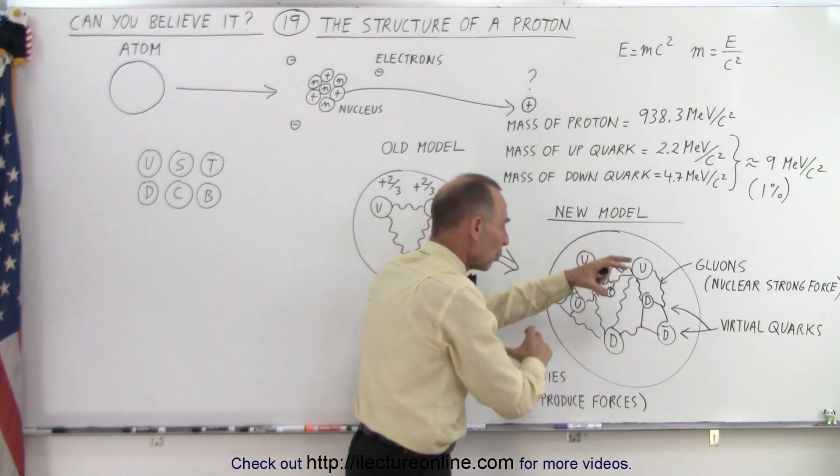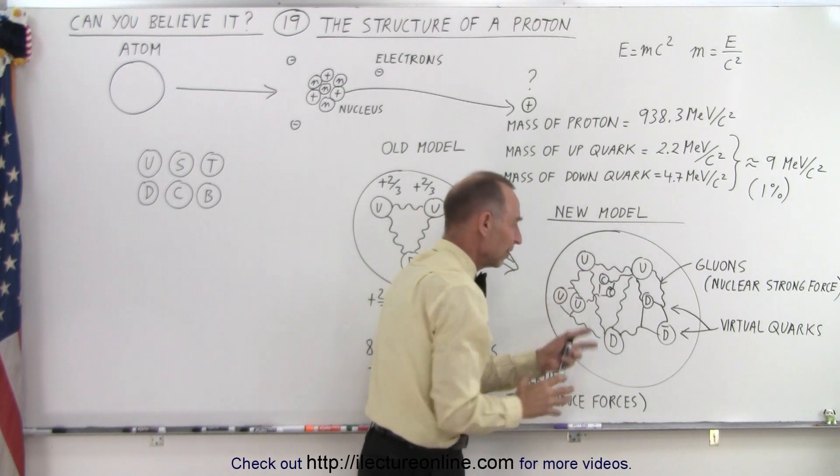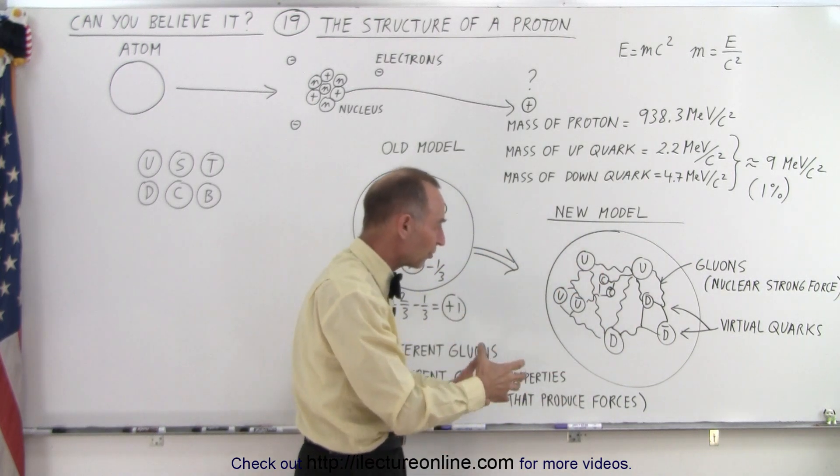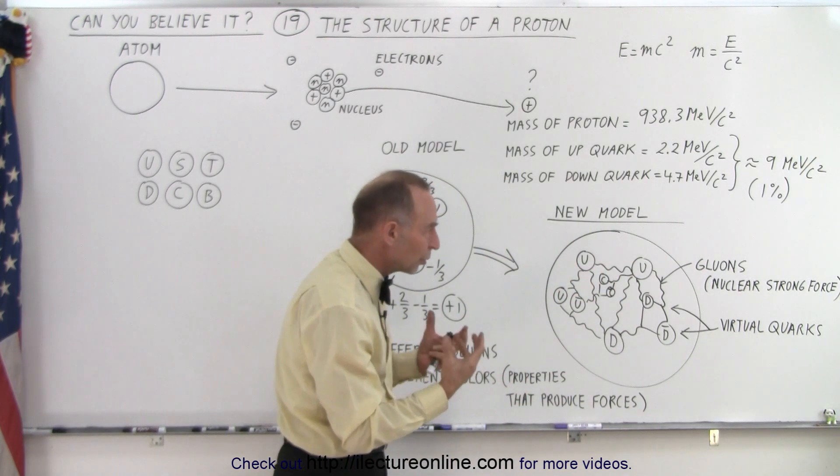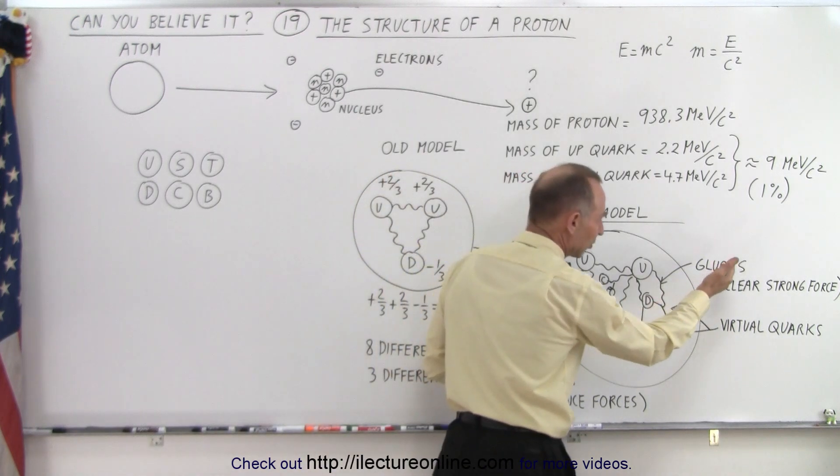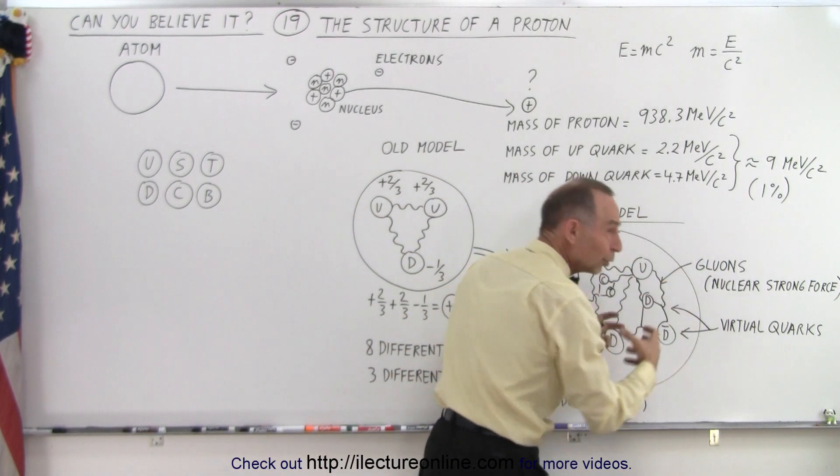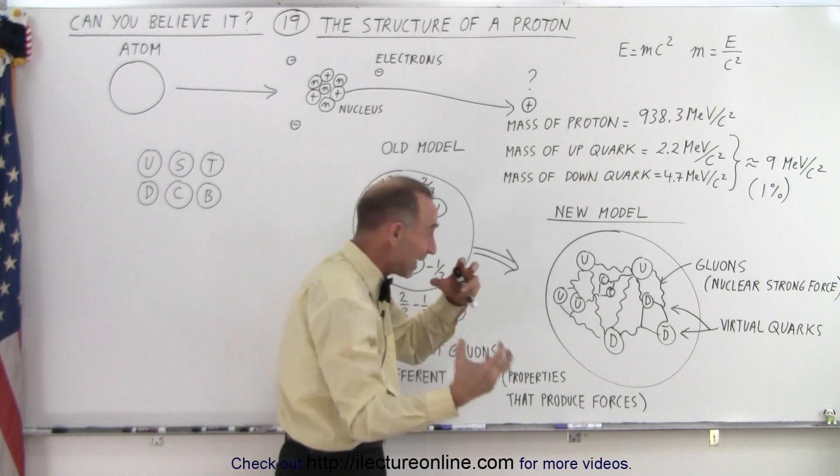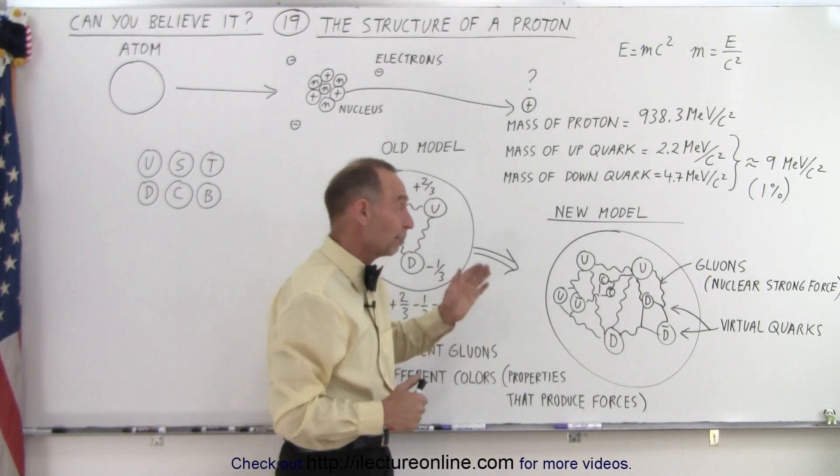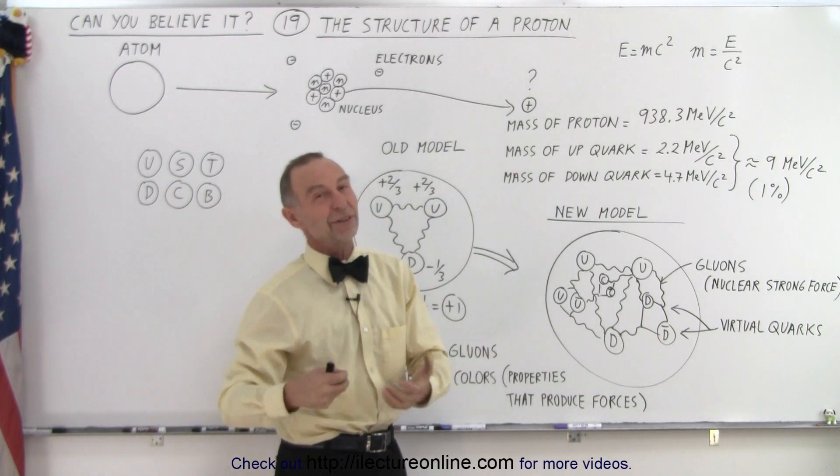And so we see this whirling mass of movement of quarks and gluons. And what the gluons are actually doing is they're actually providing the glue, that's why they're called gluon, to keep all that together. It turns out that protons are extremely stable particles.